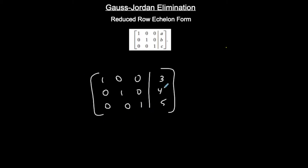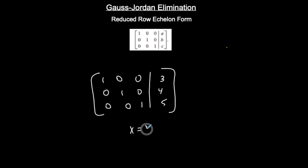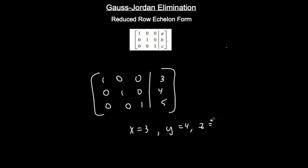Gauss-Jordan elimination is the process we use to create or convert a matrix into reduced row echelon form. If I convert this back into equation form, 1x is 3, 1y is 4, and 1z is 5 — I go straight to my solutions if I'm in this form. I might as well go all the way to reduced row echelon form rather than doing back substitution, but we need to know how to do both.